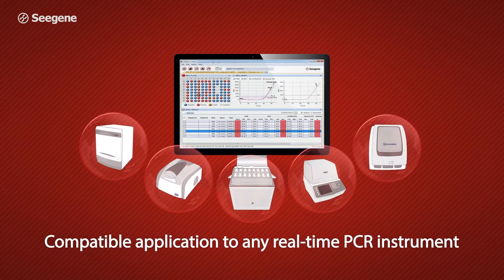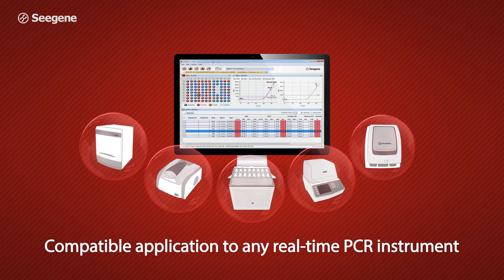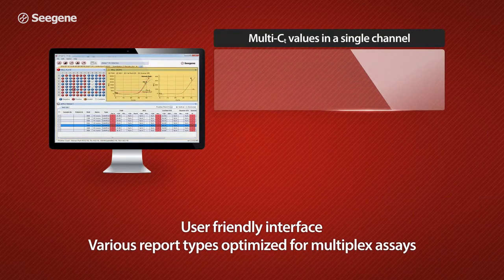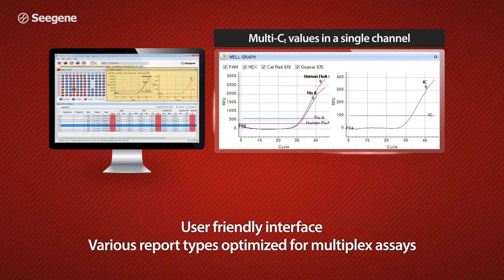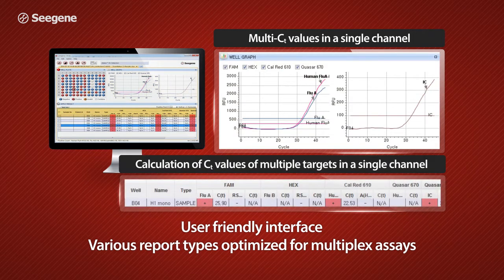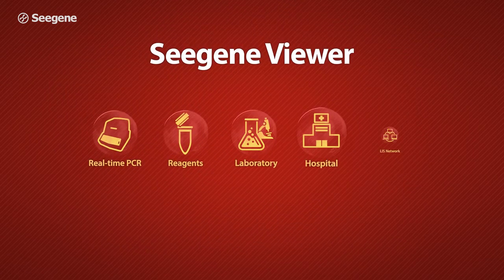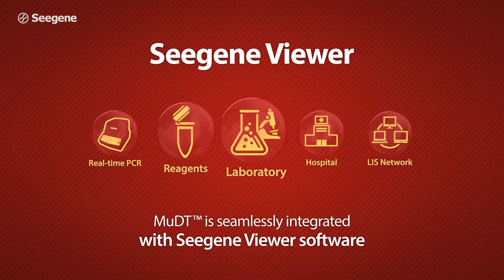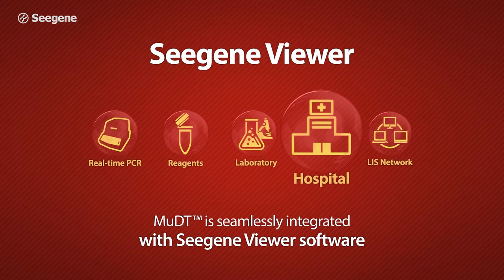The C-Gene Viewer Analysis Package is compatible with any real-time PCR instrument. Use this intuitive, easy-to-use software to analyze multiple CT values of targets in a single channel. C-Gene Viewer provides color-coded result interpretation, graph images, and a result sheet of test samples. Its open architecture is also compatible with most LIS software systems for seamless data workflow.